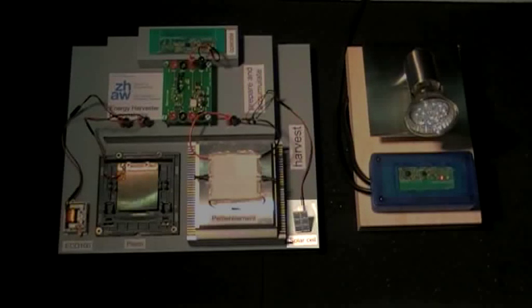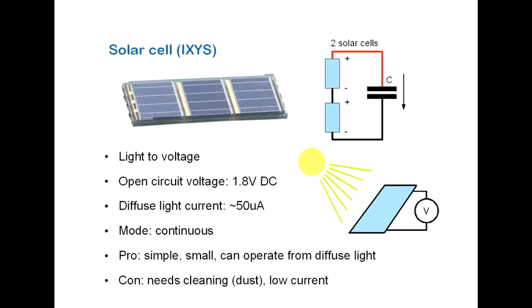The solar cell transforms light to voltage. In the demo, there are two solar cells with three cells used. In this way, the output voltage of both cells is about 3.6 volts and can directly be stored in a capacitor. It works also in continuous mode.